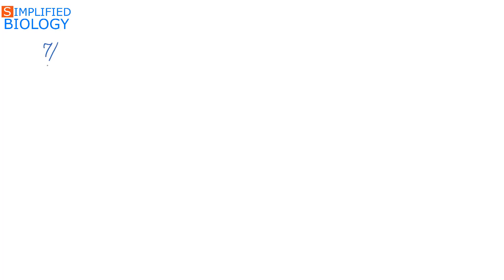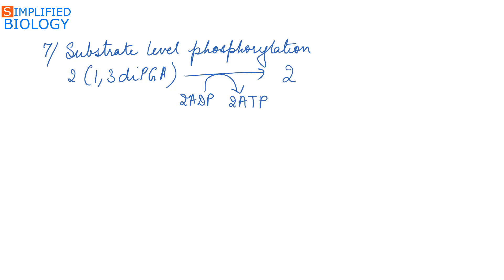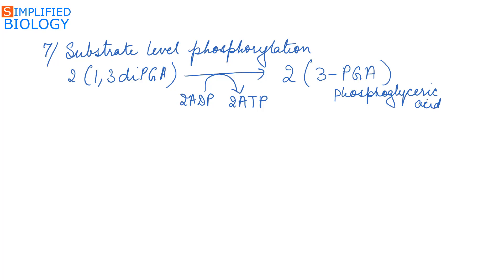The next step is also known as substrate level phosphorylation, as ATP is formed. 1,3-diphosphoglyceric acid is a high energy compound; it reacts with ADP to form ATP and is itself converted into two molecules of 3-phosphoglyceric acid. Since ATP is formed here, the enzyme is phosphoglycerokinase.